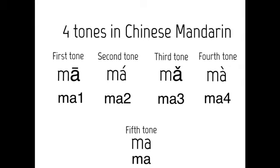The fifth tone only appears in linking verbs and in repeated words like papa, mama, where the second repeated word takes the fifth tone. It's not very common. The fifth tone has no tone marking — it simply stops at the end. For example: 'papa' and 'mama' — the second syllable just stops shortly. That's how the fifth tone works.